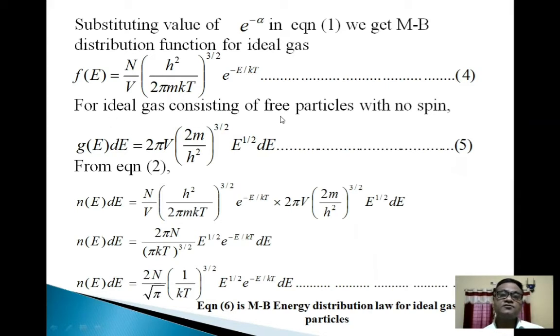So friends, for an ideal gas consisting of free particles with no spin, g(E)dE = 2πV*(2m/h²)^(3/2)*E^(1/2)dE. Equation 5. So from equation 2, from this equation 2...